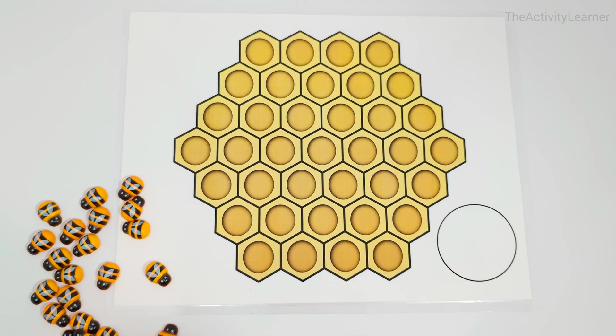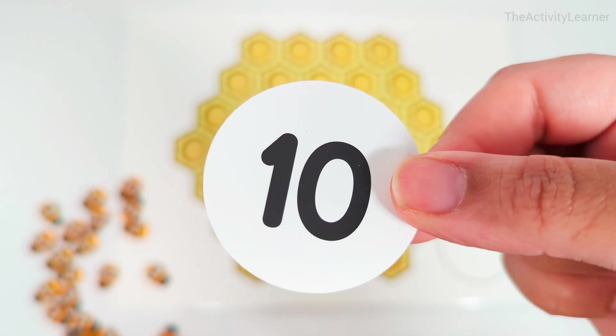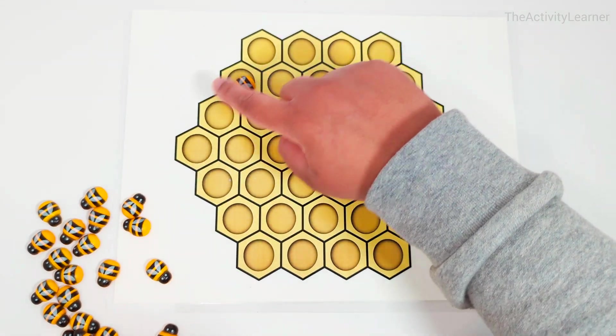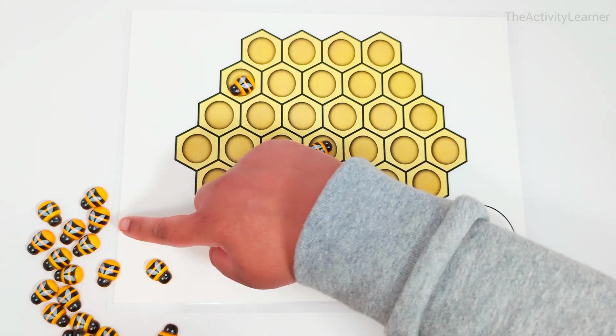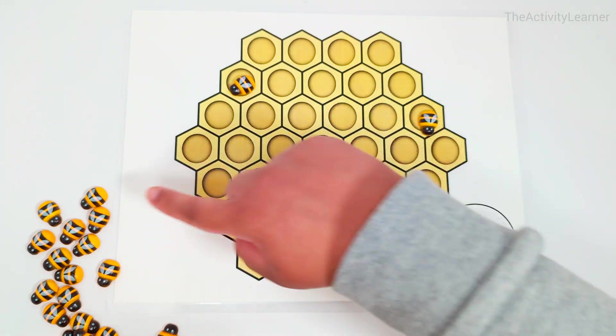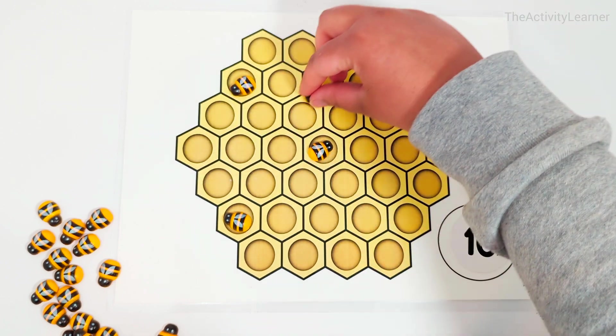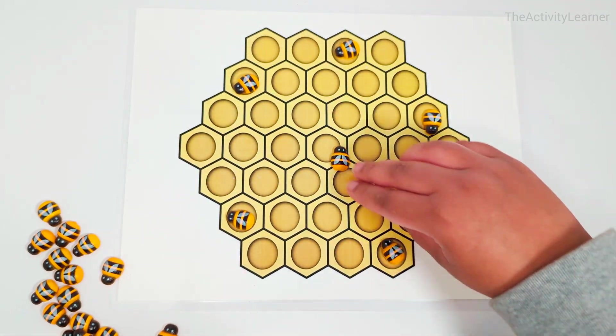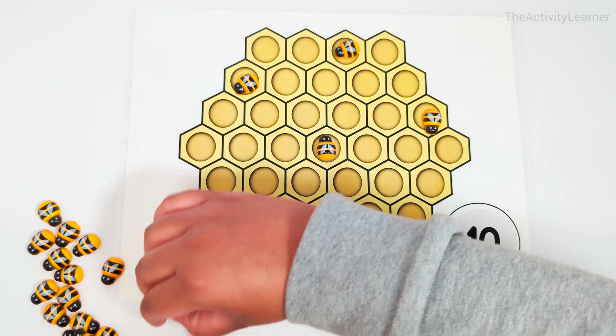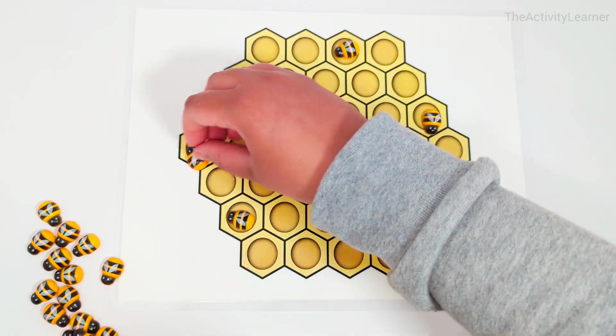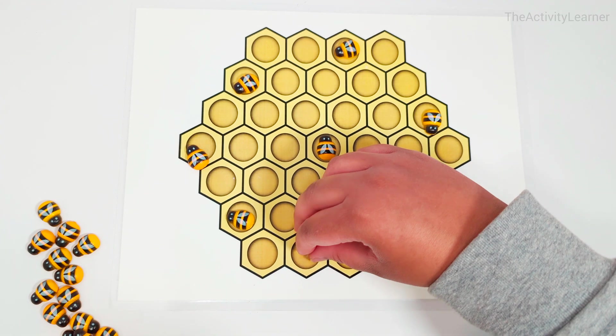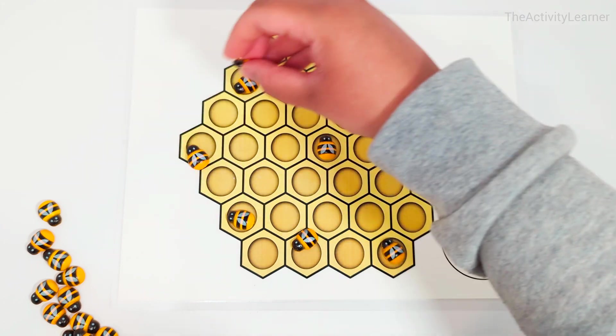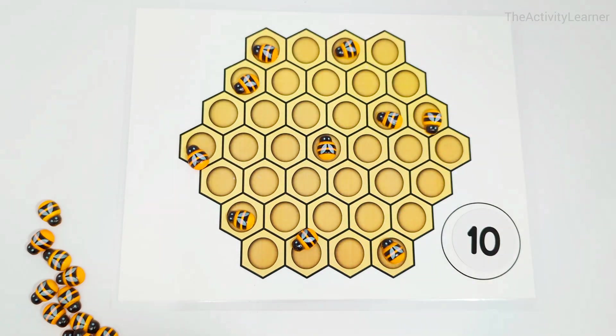Number ten. One, two, three, four, five, six, seven, eight, nine, ten. Ten bees.